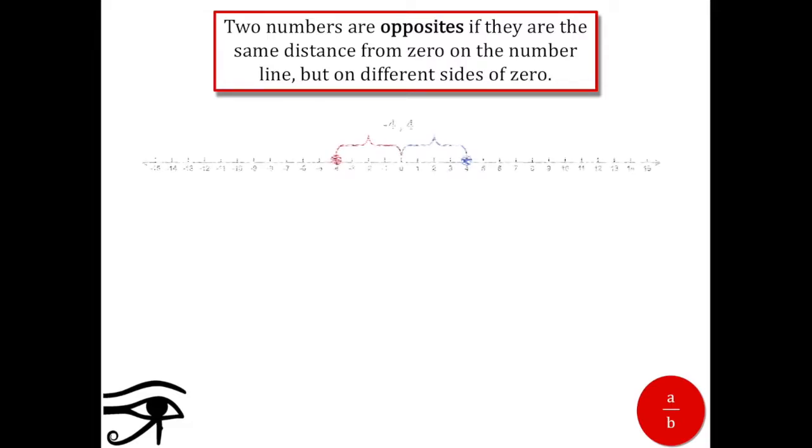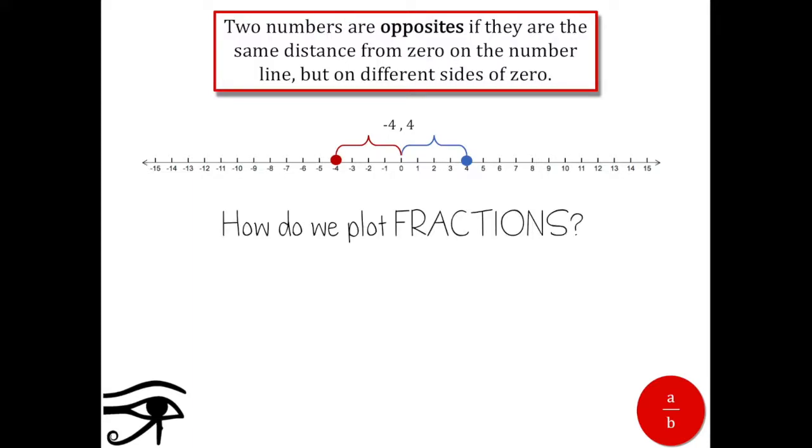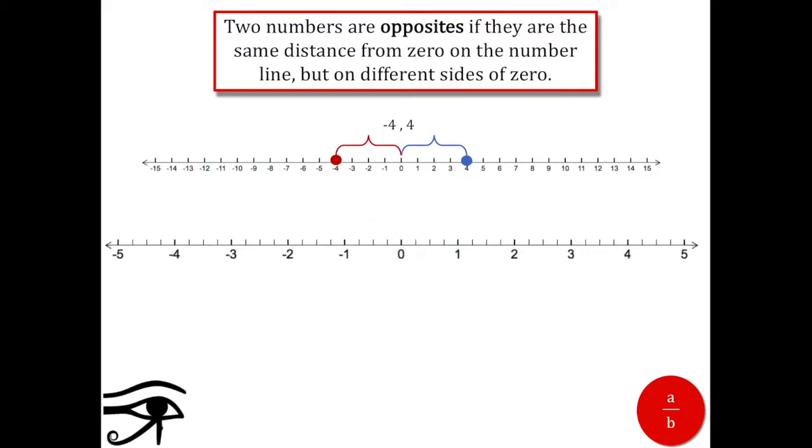But how do we plot fractions on the number line? Well, let's zoom in. Between every integer is a whole host of numbers. Check out these two: negative one and a half and one and a half.